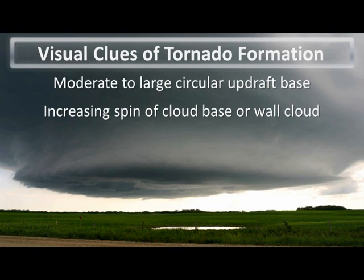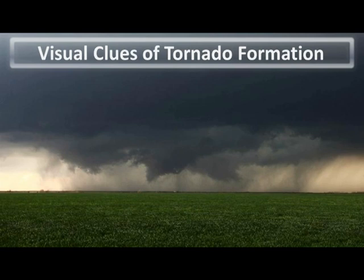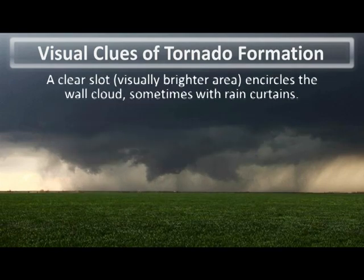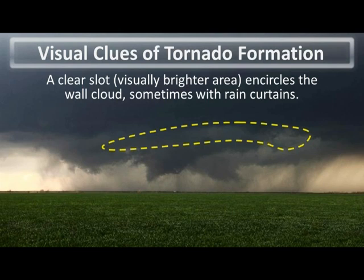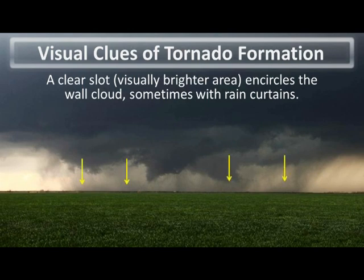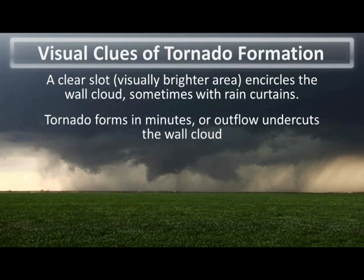Another visual clue of possible tornado formation is the formation of a clear slot, which is a visually brighter area within the wall cloud itself. This will encircle the wall cloud and sometimes has a rain curtain associated with it. Here the clear slot is outlined by the yellow dashed line — that area is a little bit brighter colored than the rest of the wall cloud. The yellow arrows are pointing out the rain curtain encircling the clear slot as well. Whenever you start to see this clear slot form, a tornado can form within just a minute or two. If a tornado does not form, the outflow will undercut the wall cloud and could inhibit tornado formation.